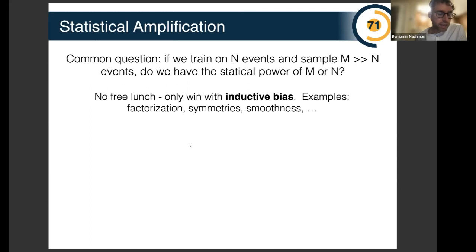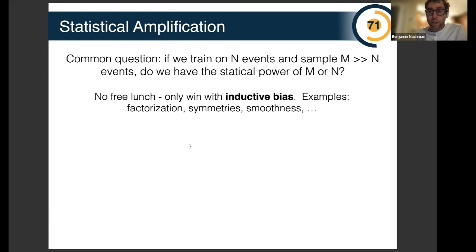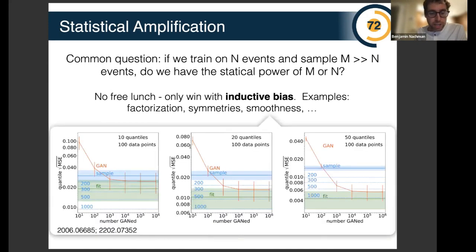One small caveat: we have to be careful about over-sampling. If you train on N events and want to sample M events, where M is much bigger than N, do we have the statistical power of M or N? It turns out you can have statistical power greater than N, which comes from inductive bias — the fact that physics densities tend to be smooth, as are our neural networks. A sample trained with a GAN can actually be better than what you'd expect from just the starting sample size: you can over-sample and achieve statistical amplification.